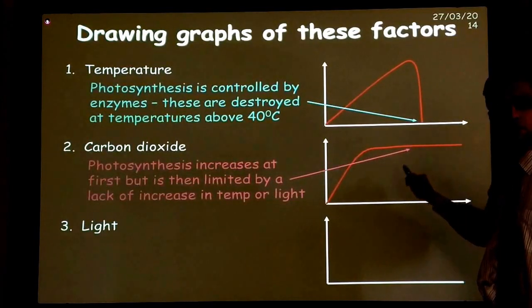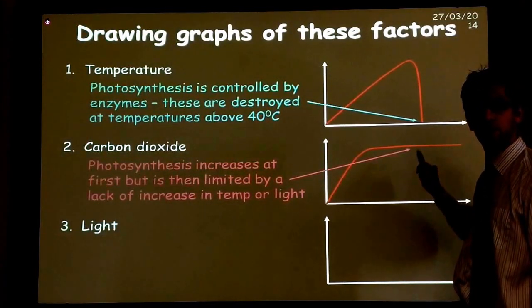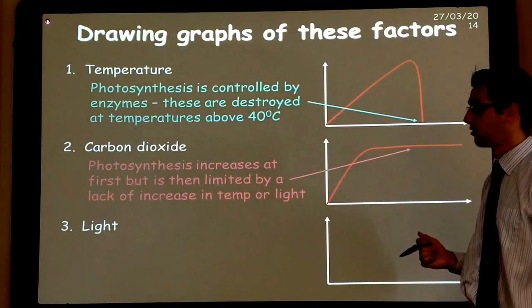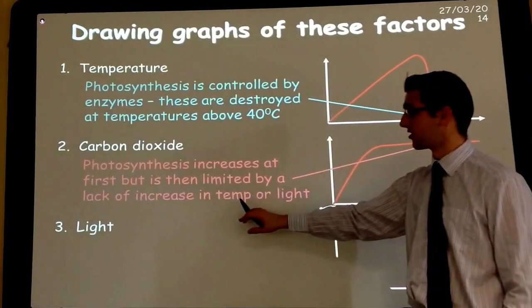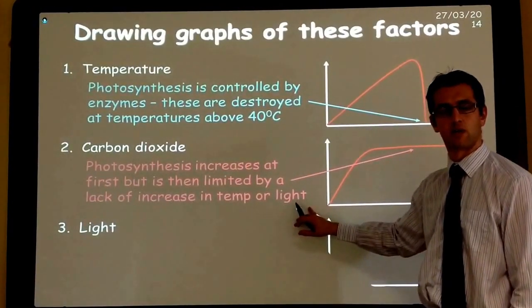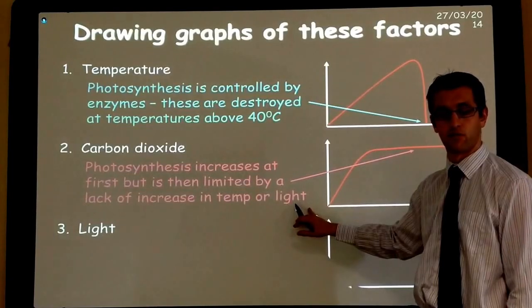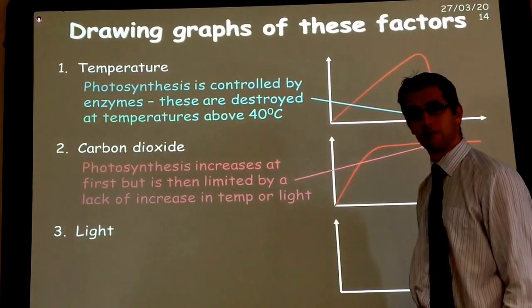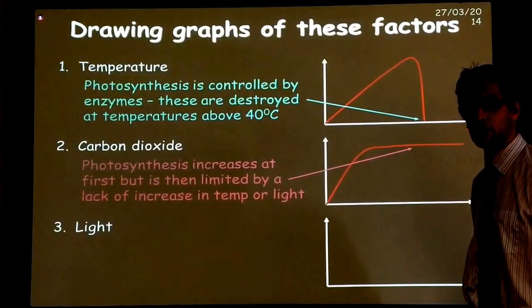That therefore means that something else must be stopping it from going any quicker. And that could be usually one of two things. It could be either the temperature of the reaction is too low, or there is insufficient light to improve the rate of photosynthesis. These two are described as limiting factors. Key terms again.